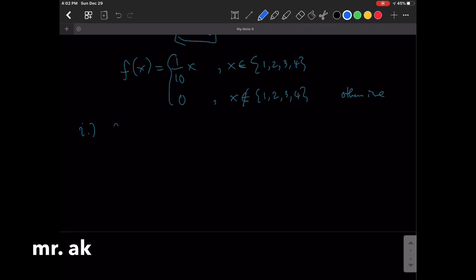So, let's start with f(1). f(1) is 1 over 10 times 1. 1 over 10. That is greater than 0. Next is f(2). That's 1 over 10 times 2. That's 1 over 5. Still greater than 0.